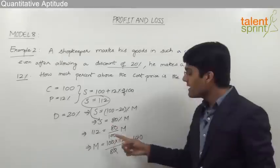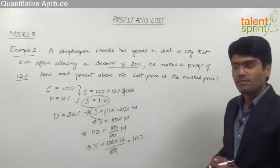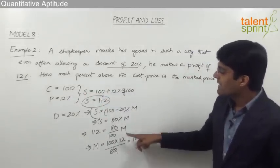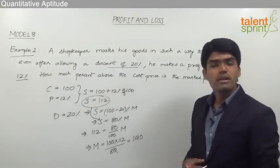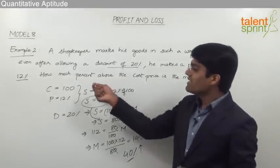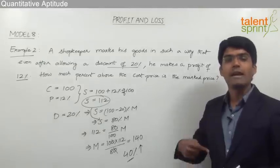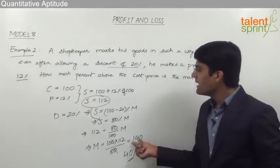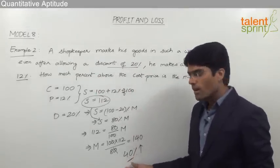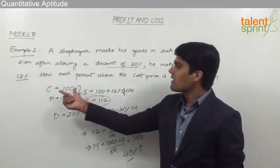For a cost price of 100, the marked price should be 140, so that even after a discount of 20% on the marked price, we make a profit of 12%. The question asks how much percent above the cost price is the marked price. Using percentage change: (140 − 100) ÷ 100 × 100 = 40%. So the marked price is 40% more than the cost price.